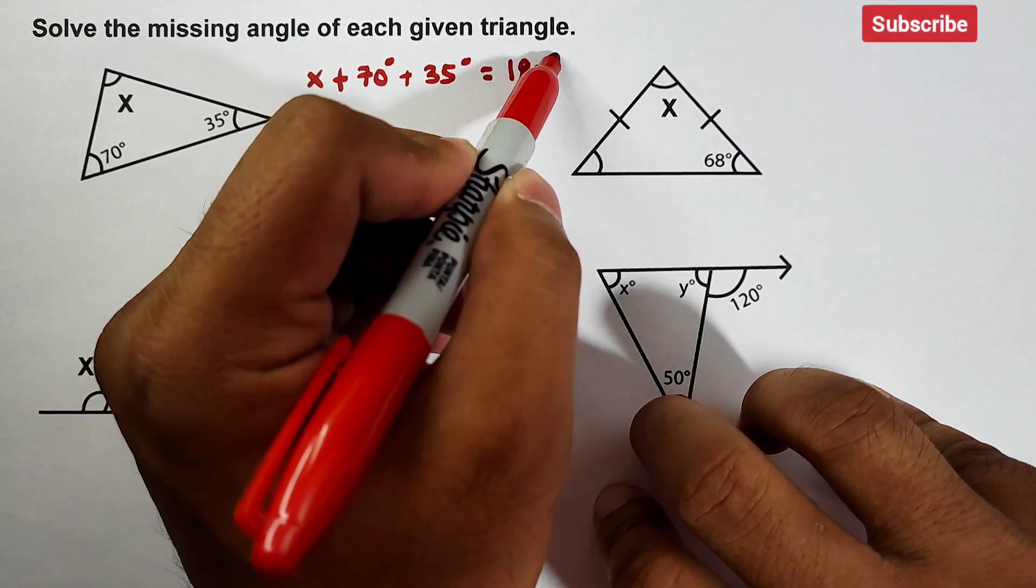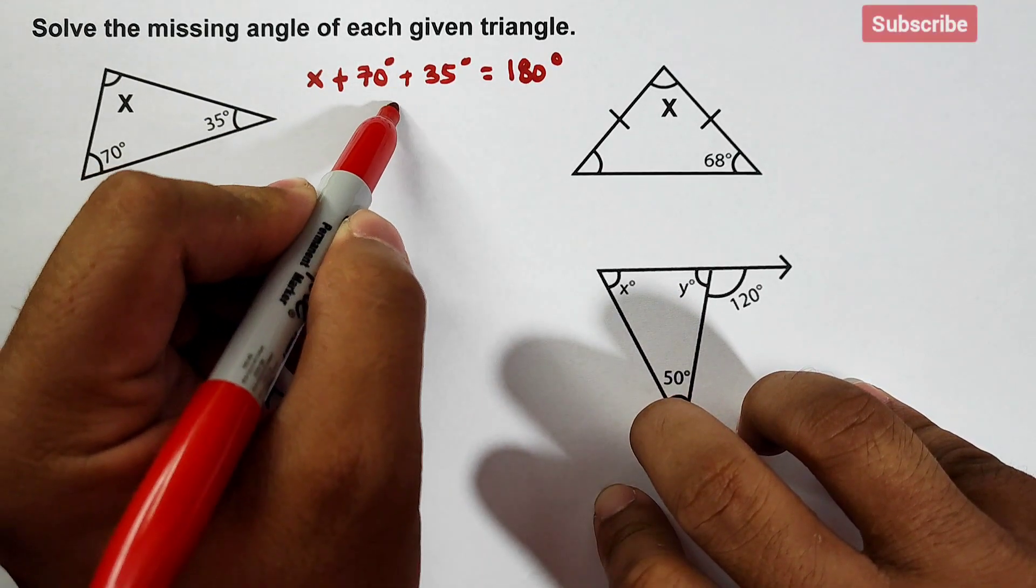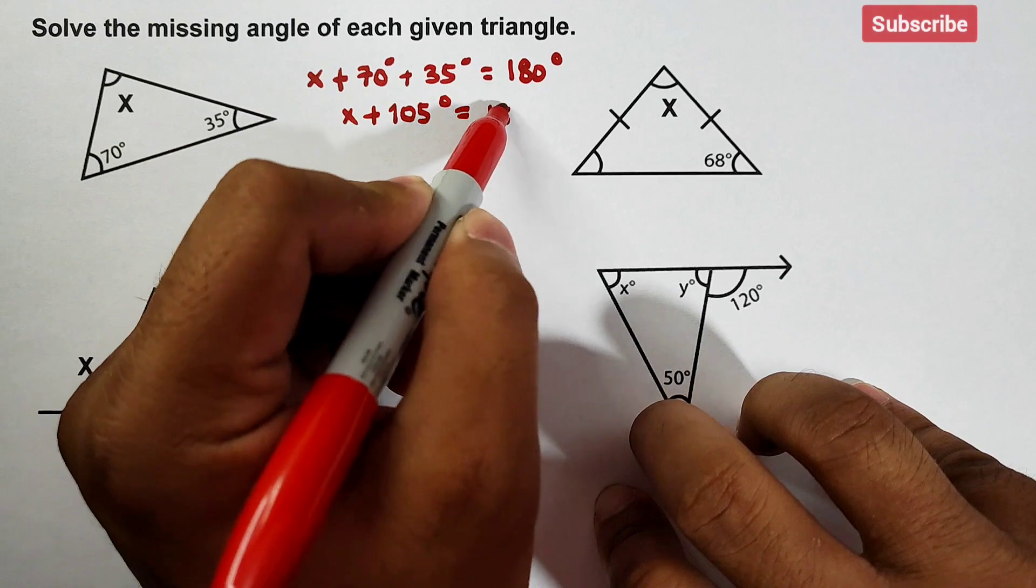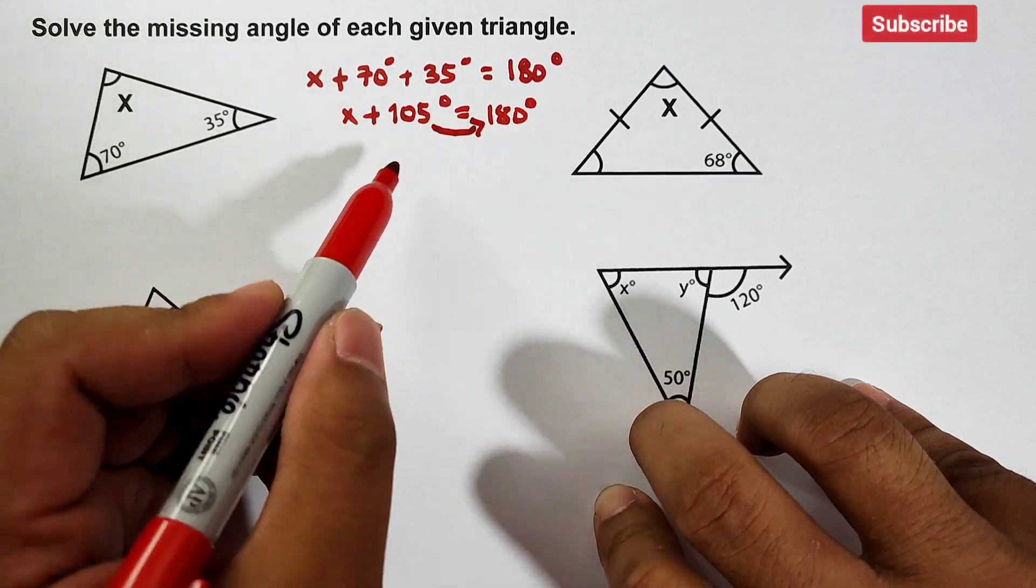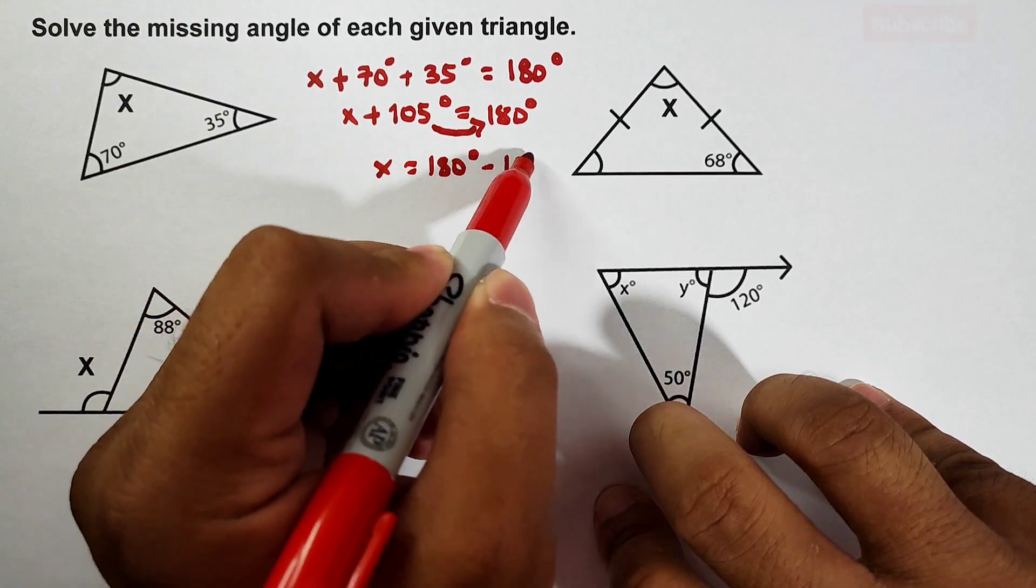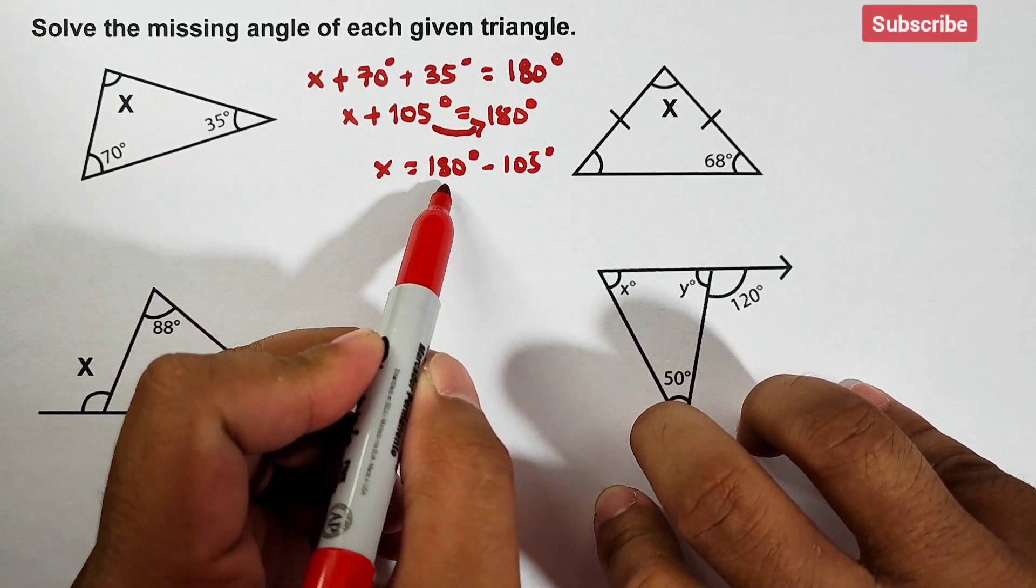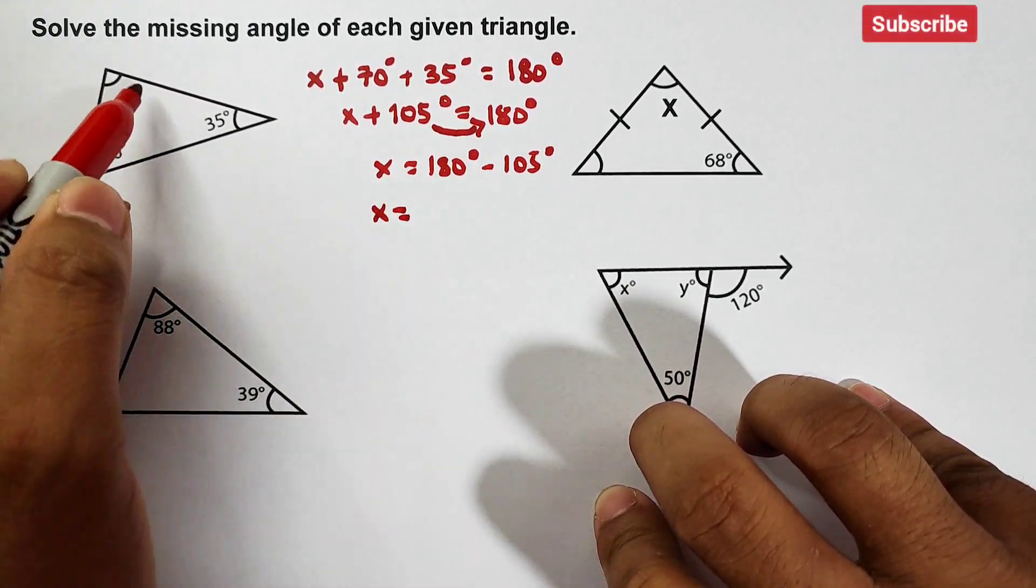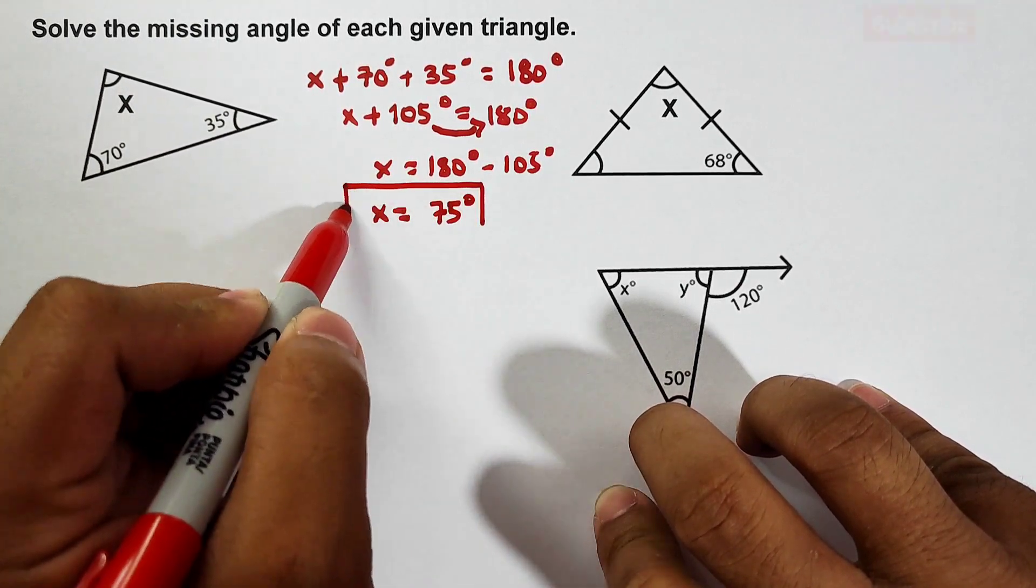To find x, add this to 70 plus 35, that is 105 degrees plus x is equal to 180 degrees. Then to solve for x, transpose this 105 to the other side, so that is x is equal to 180 degrees minus 105 degrees. And get the difference from these two angles, 180 degrees minus 105. Your x, or the measurement of this angle, is simply 75 degrees, and this is the value of the missing angle in triangle number one.